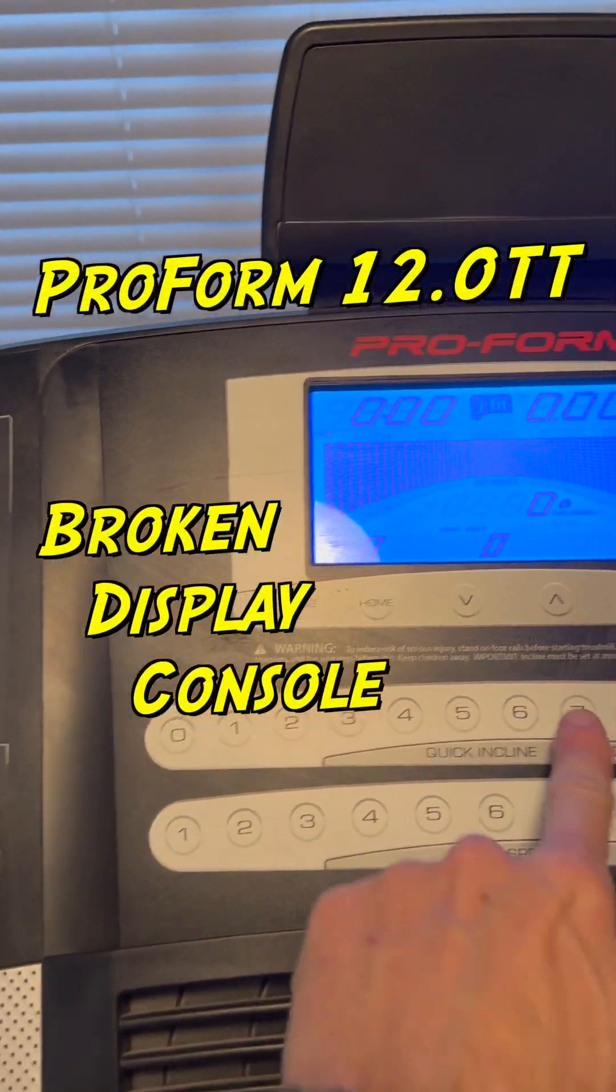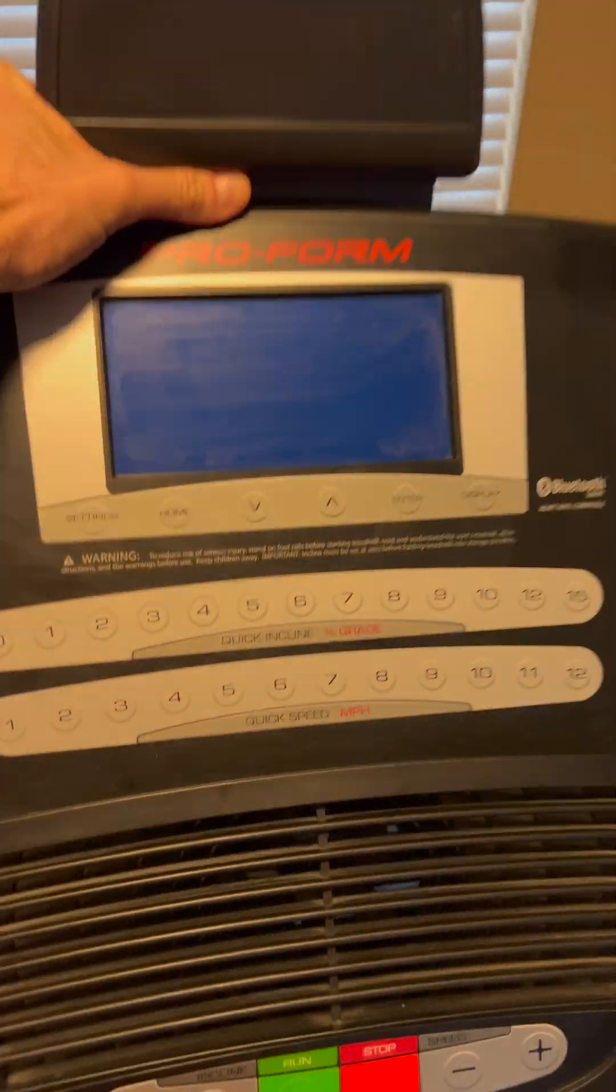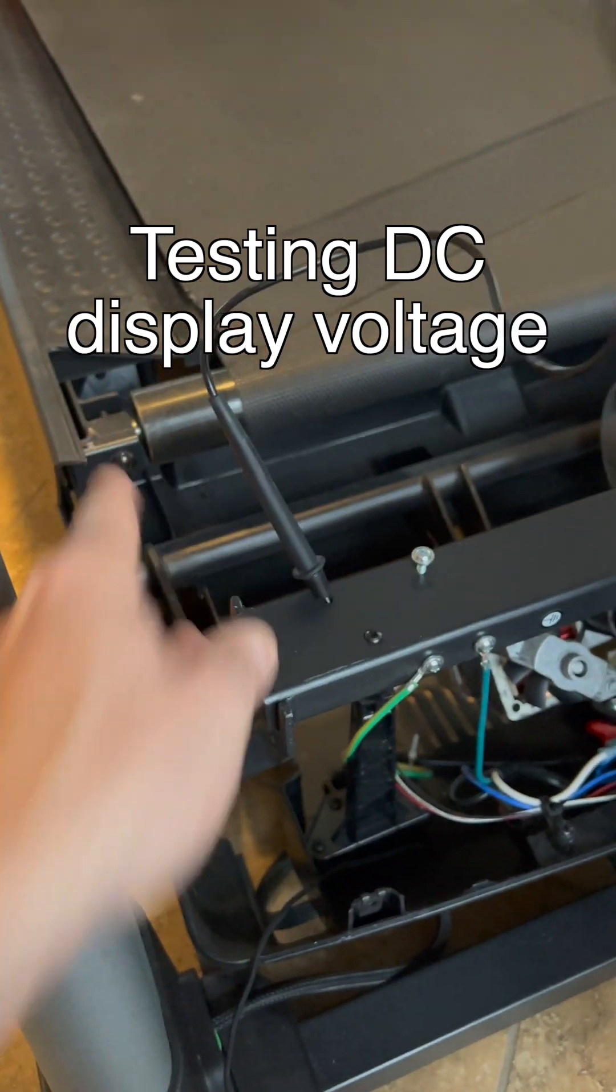This is a Proform 12.0 TT treadmill and it has a broken display console. That means the incline and the speed buttons and nothing else works. But let's get to work testing it.